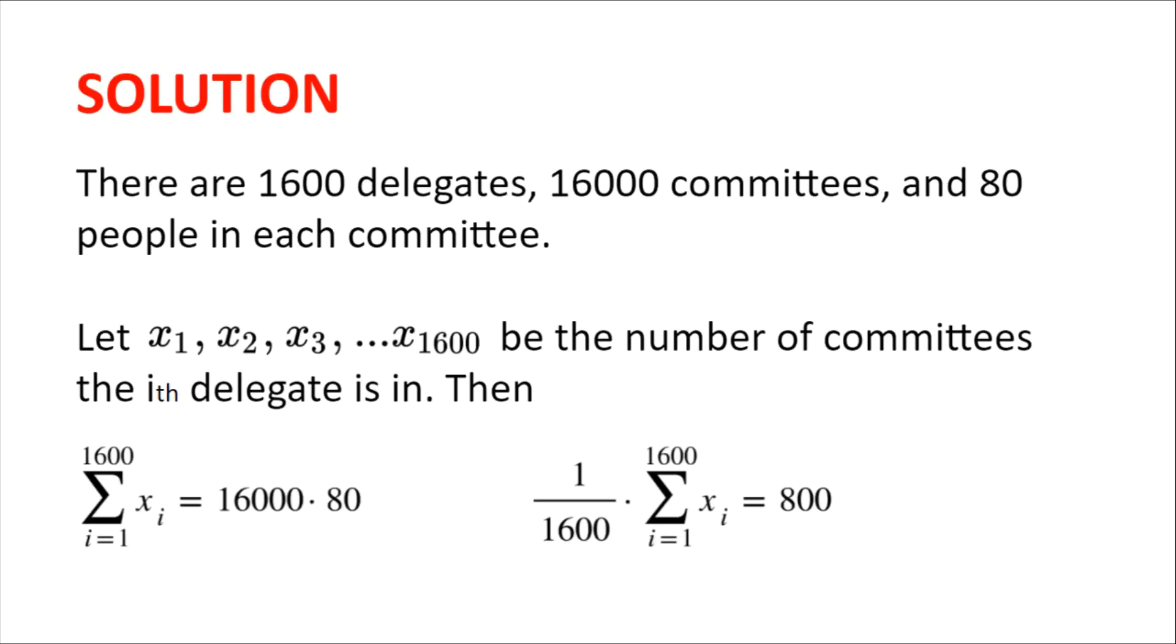Solution. Let x1, x2, x3, x1600 be the number of committees the ith delegate is in. Then because there are 1,600 delegates, 16,000 committees and 80 people in each committee, the sum of all xis is equal to 16,000 multiplied by 80, which we can rewrite as 1 divided by 1,600 multiplied by the sum of xis equal to 800.